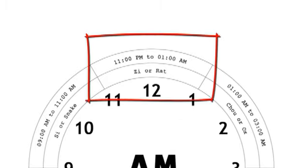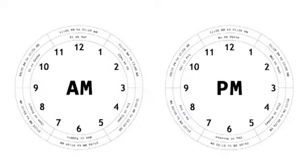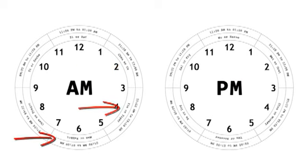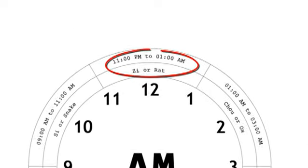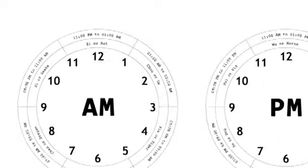The time period between 11 pm and 1 am is named after the earthly branch zi. This is followed by the other branches: chou, yin, mao, and so on. Since the zi branch is also associated with the rat, this time period is also known as the rat hour.